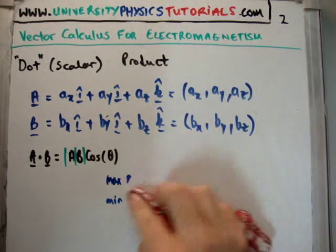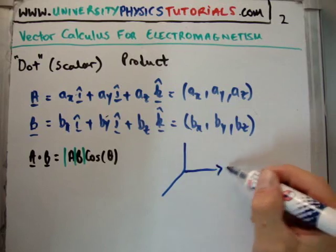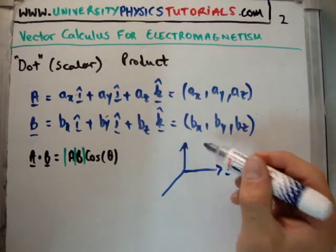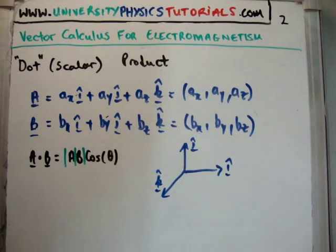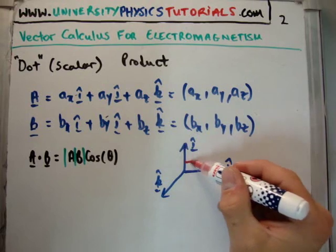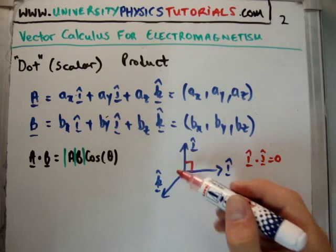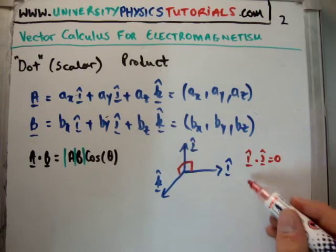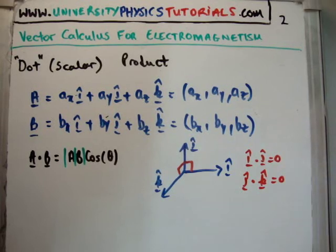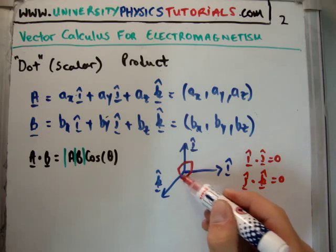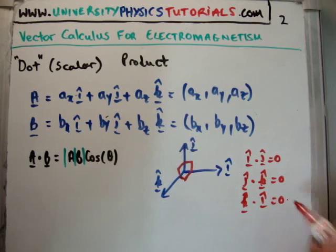OK, so can we think of any vectors written above here which are perpendicular? Of course we can. If we draw in our Cartesian or rectangular coordinate system, let's say we have i-hat, j-hat and k-hat. By definition, i-hat is perpendicular to j. That means i-hat dot j-hat is equal to 0. By definition. Now, j is perpendicular to k by definition. That means that j-hat dot k-hat is equal to 0. And of course you can see where this is going, that if you take the dot product, k-hat dot i-hat, you also get 0.